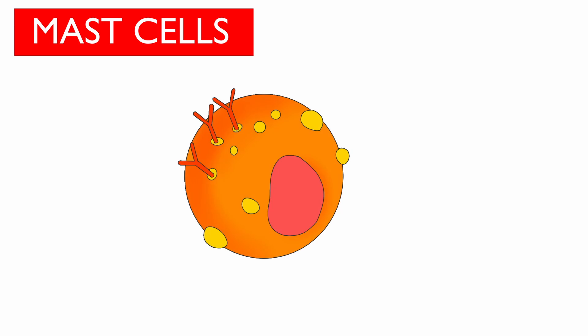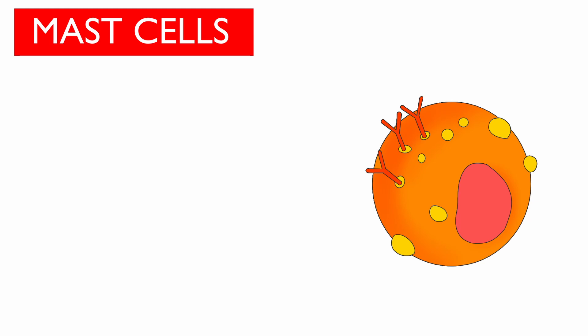Then we have mast cells, also known as basophils when in blood. They are amoeboid in shape, which means their shape is not fixed and can change to aid in movement. Their function is to secrete hormones. The three main hormones they secrete are histamine, serotonin, and heparin.